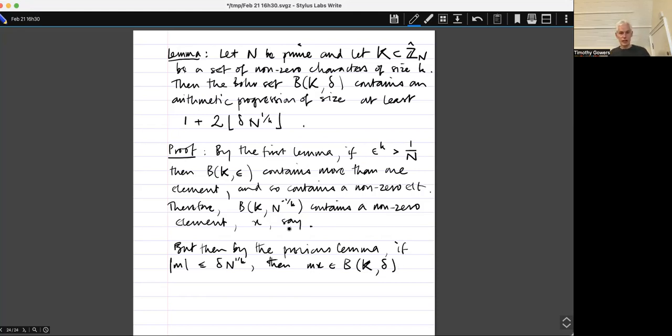Because X belongs to b K N to the minus one over k. So when I take M of those things, it's going to be in the sum of M of this lot. So I multiply that N to the minus one over k by at most delta times N to the one over k. So I get up to at most delta. As I say, I'm using the fact that if x belongs to this set, it's symmetric, so minus x must also belong to it.